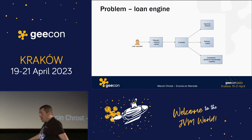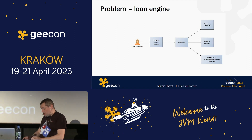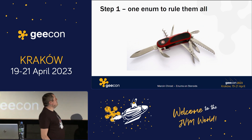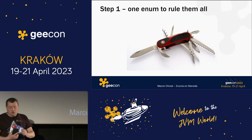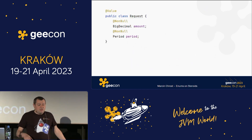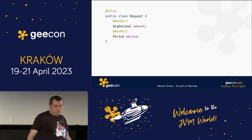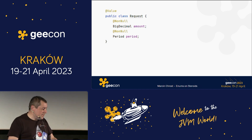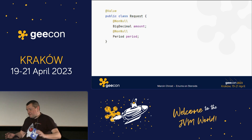So how will we model this loan engine in code in the first version? The first option is to just use an enum to represent all the responses. Let's start from the request, because it's a very simple class — just modeled with two fields: amount and period. It's just an immutable class which we pass to the evaluator.